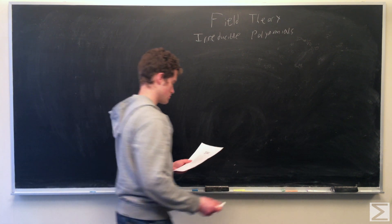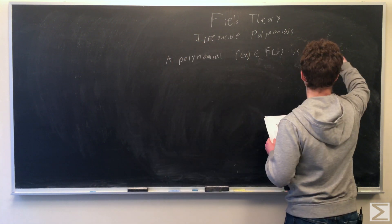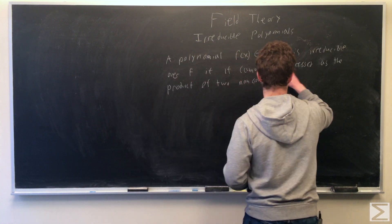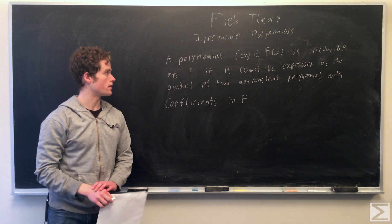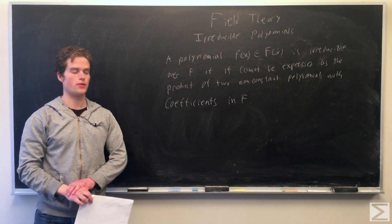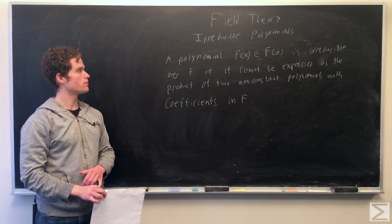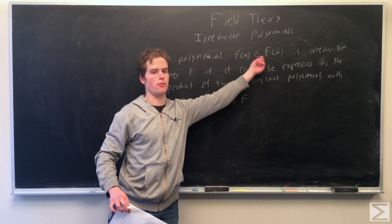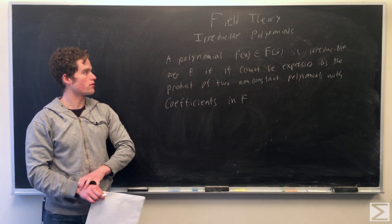So first, a definition. We're going to say a polynomial f of x, where big F is going to be our field. Big F of x is the ring of polynomials with coefficients in F. f of x is some polynomial in big F of x.